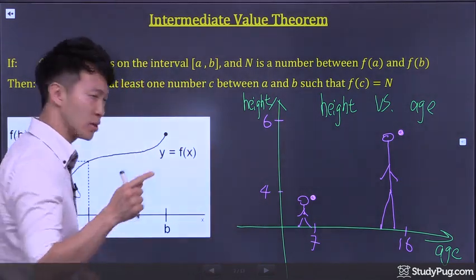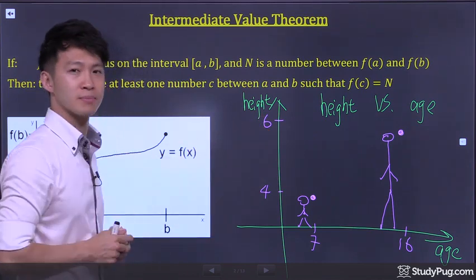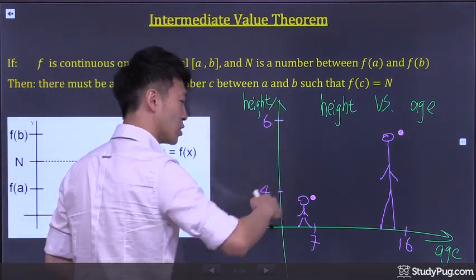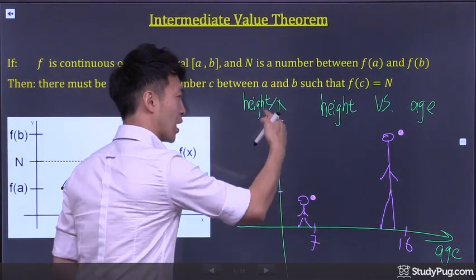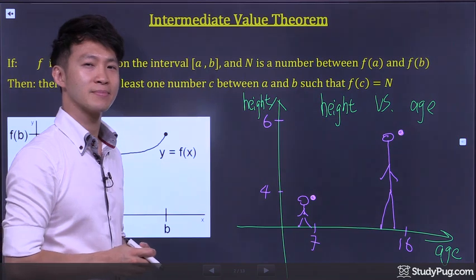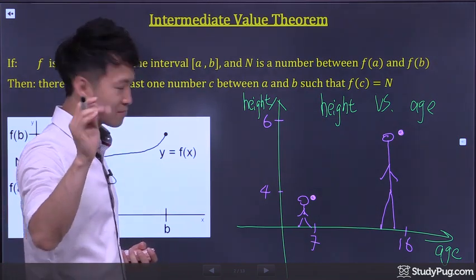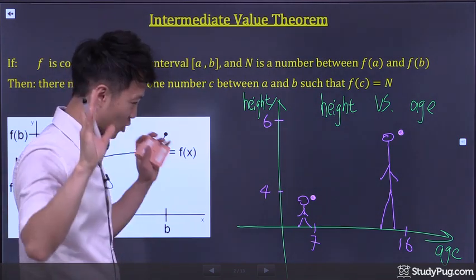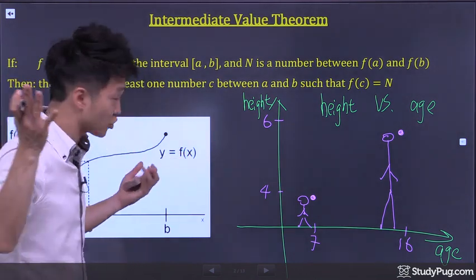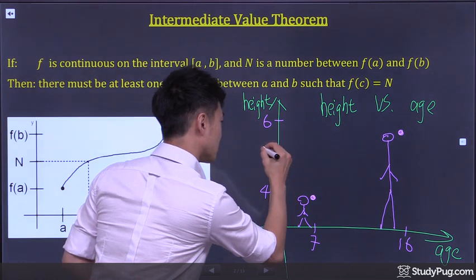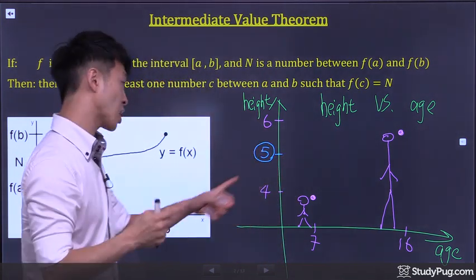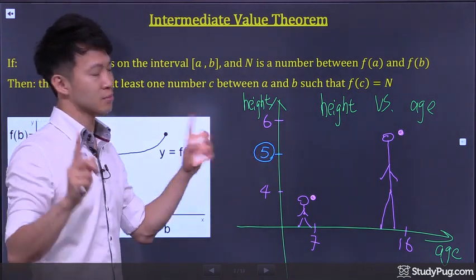I want you to pick a number between these two numbers. Go ahead. Pick any height between 4 feet tall and 6 feet tall — any height. Say you pick 5? Sure, 5 is good, because 5 is a number between 4 and 6. So say you pick 5 feet tall.